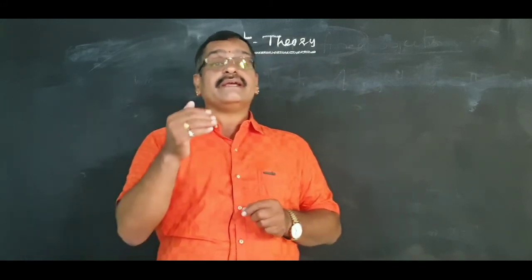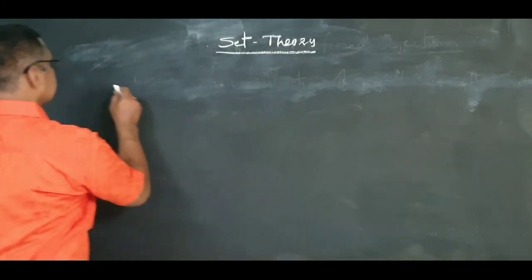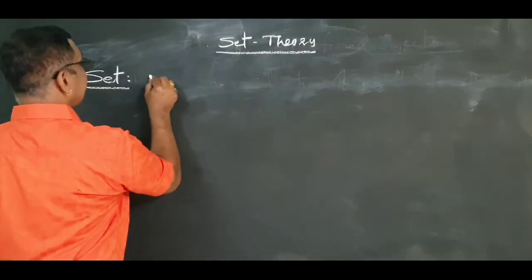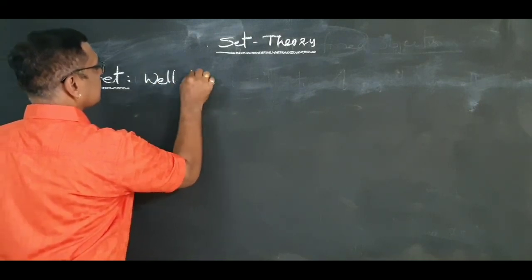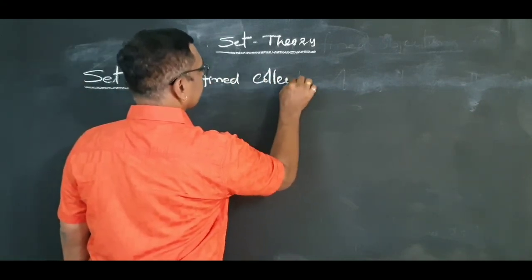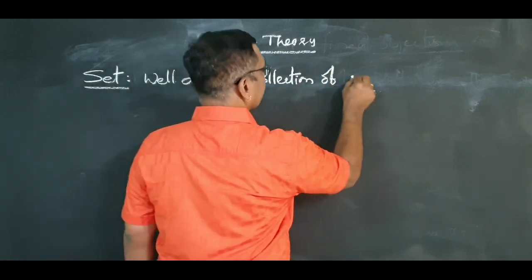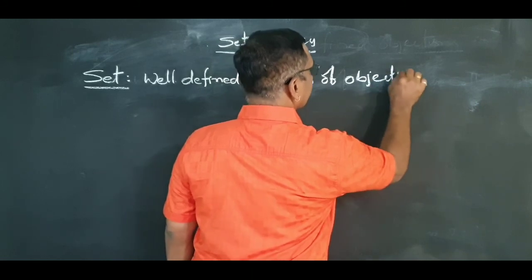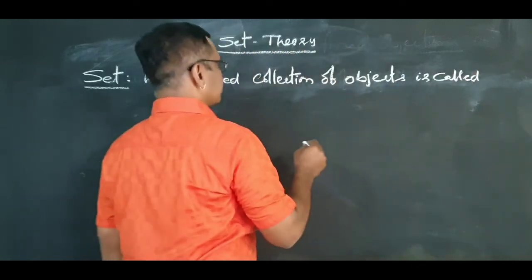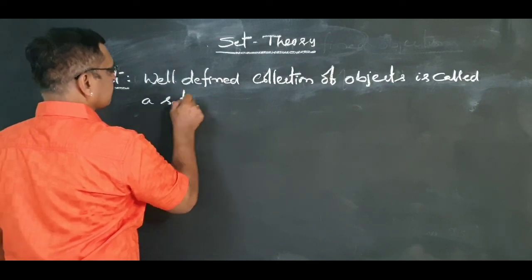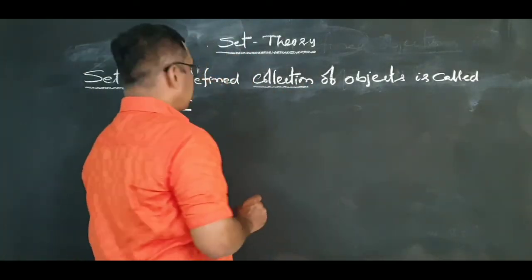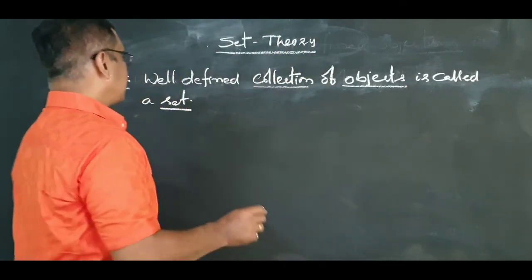Then what is meant by a set exactly? Set is defined as a well-defined collection of objects. Here, we know what is meant by collection and objects, but a new term is given as well-defined.